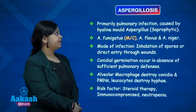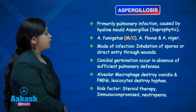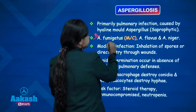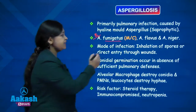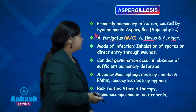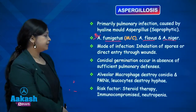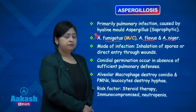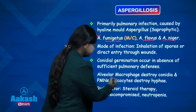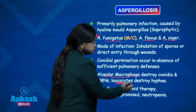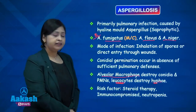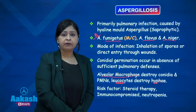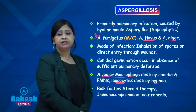Coming to the next opportunistic infection — aspergillosis. Primary pulmonary infection is caused by Aspergillus; it is mainly a pulmonary infection and the most common species causing human infections is Aspergillus fumigatus. The mode of infection is inhalation of spores or direct entry through wounds. Conidial germination occurs in the absence of sufficient pulmonary defense when immune status goes down. Alveolar macrophages are responsible for destroying conidia and leukocytes destroy the hyphae. Risk factors include prolonged steroid therapy, HIV, and neutropenia.